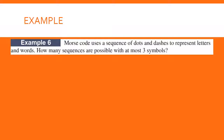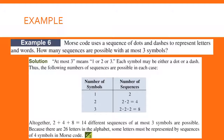Now try this example. Morse code uses a sequence of dots and dashes to represent letters and words. How many sequences are possible with at most three symbols? At most means you can have one, two, or three symbols, so we need to consider each case. If there's one symbol, you can have either a dot or a dash, so there are two possibilities.